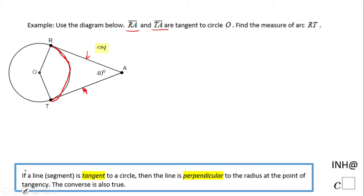In other words, OR is perpendicular to RA, and OT is perpendicular to TA, because these two segments are tangent to circle O. So my first statement I'm going to write here: OR perpendicular to RA and OT perpendicular to TA.